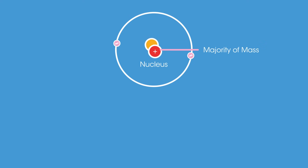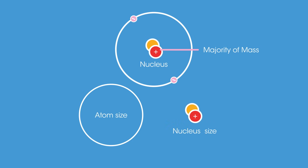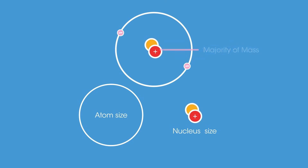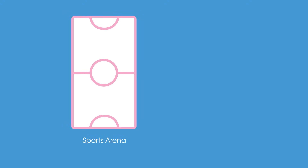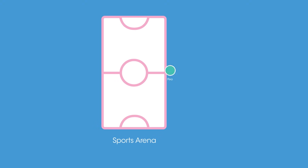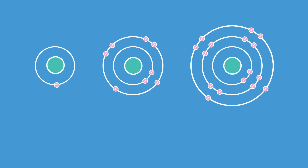The majority of the mass of an atom is contained in its nucleus, but in terms of size, the nucleus is much smaller than the atom as a whole. In fact, electrons can orbit really far away from the nucleus. If the atom was the size of a sports arena, the nucleus could be the size of a pea in the middle.